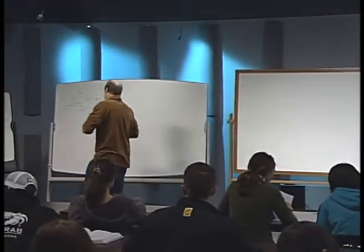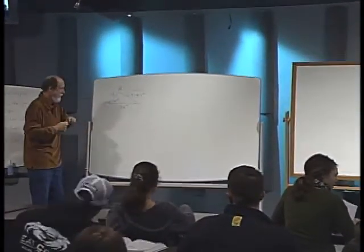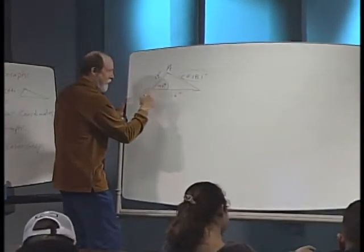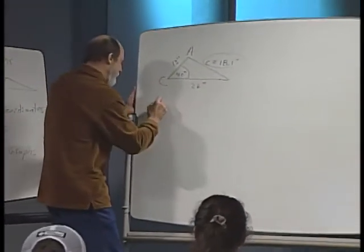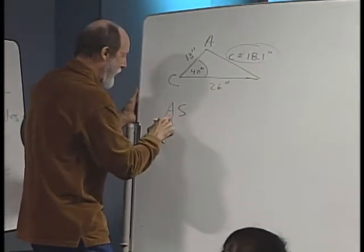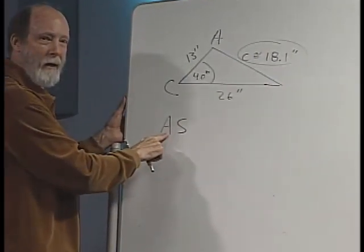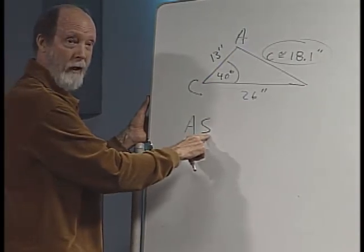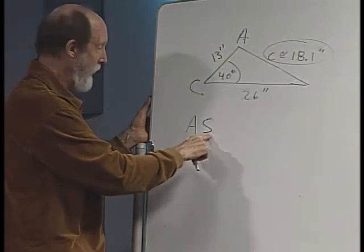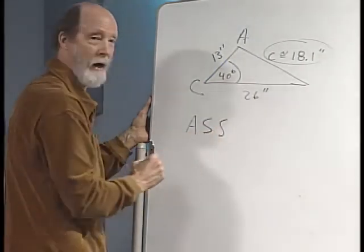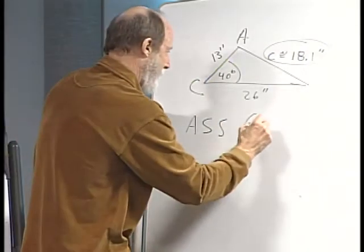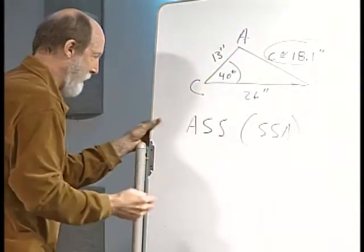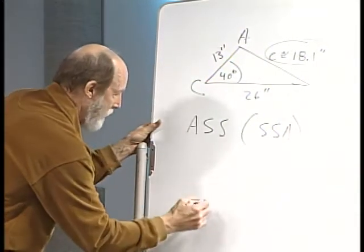One more thing I haven't emphasized: the ambiguous case for the law of sines and cosines — the SSA condition. If you're given an angle, a side hooked to it, and then you work your way around the triangle to get the other side, the book writes it as SSA.